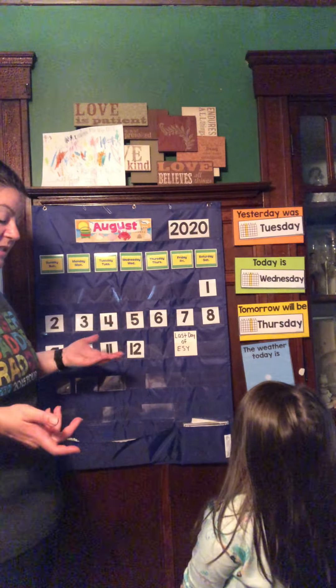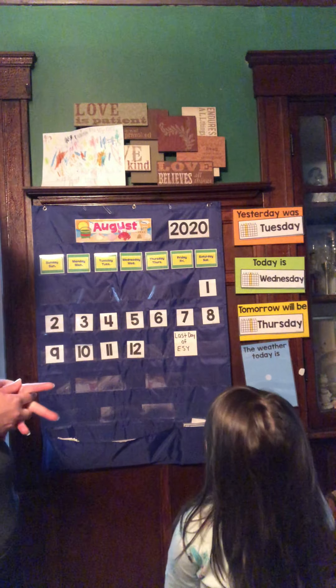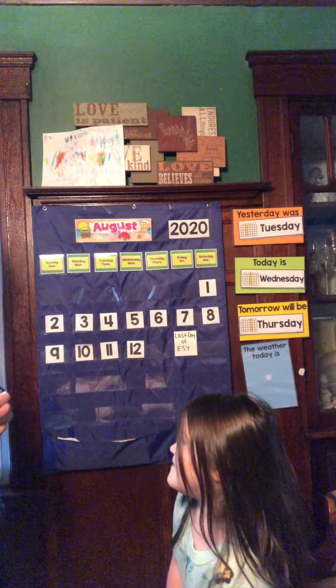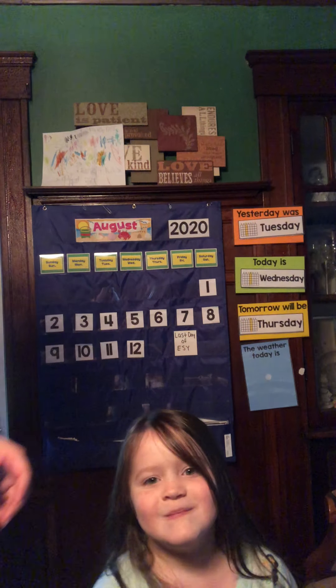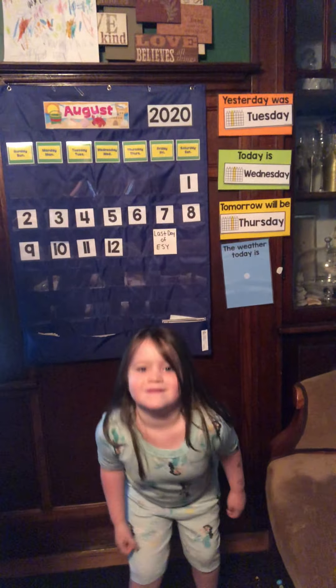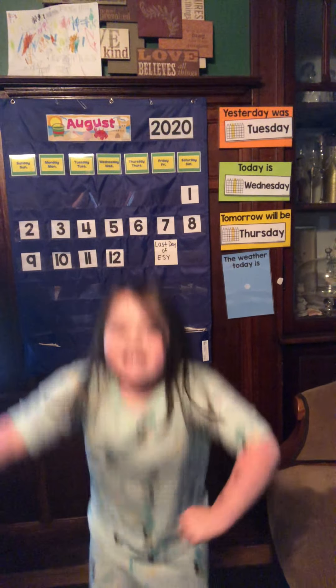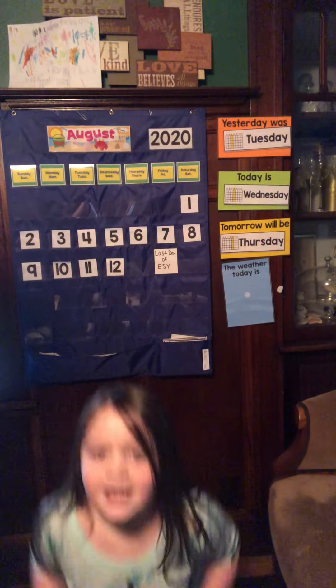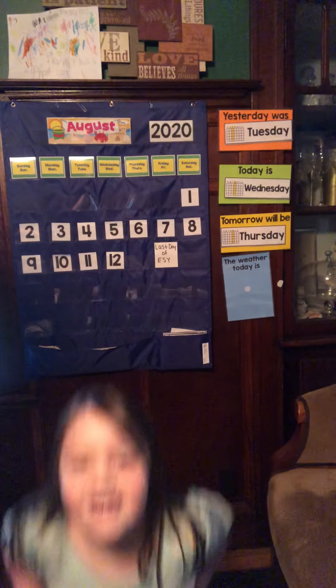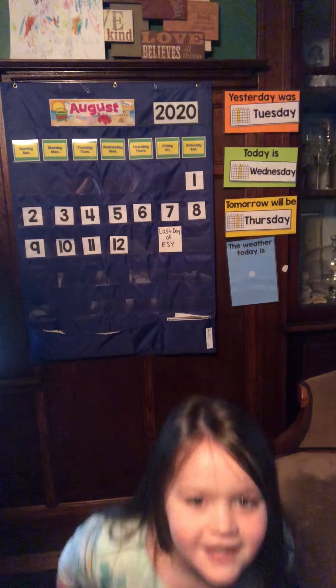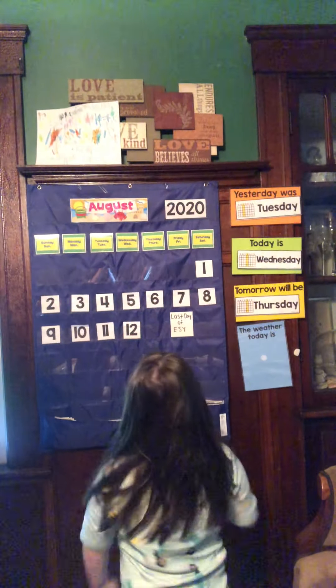Aurora, what can we do 12 times? Pick something quick. Jump! Alright, Aurora's going to jump 12 times — can you jump at home with her? Are you ready? 1, 2, 3, 4, 5, 6, 7, 8, 9, 10, 11, 12. That's hard work. Good job! You jumped 12 times.